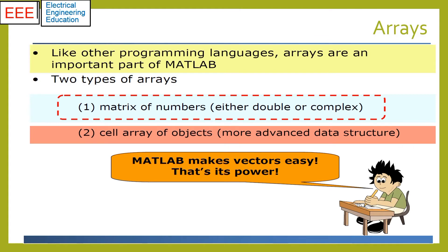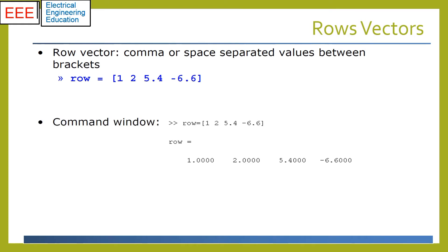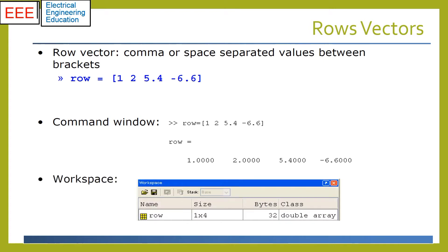MATLAB makes vector operations easy. To create an array with multiple elements in a single row, separate the elements with either a comma or space. This is called a row vector. Without the semicolon, the output can be seen in command window. The workspace window shows the array name, size, number of bytes and class. The semicolon at the end suppresses output.